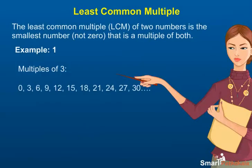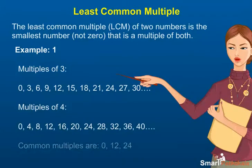Least common multiple. The least common multiple LCM of 2 numbers is the smallest number not 0 that is a multiple of both. Example: Multiples of 3: 0, 3, 6, 9, 12, 15, 18, 21, 24, 27, 30 and so on.